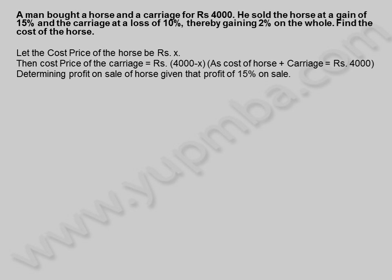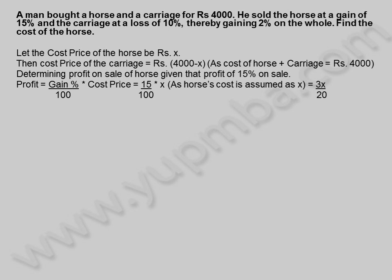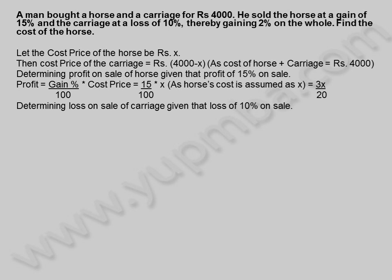Determining profit on sale of horse given that profit of 15% on sale. Profit is equal to gain percentage divided by 100 into cost price, which equals 15 by 100 into X, as horse's cost is assumed as X, giving 3X by 20.